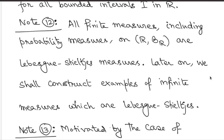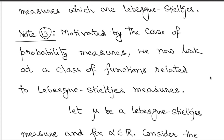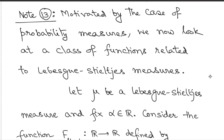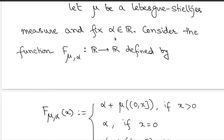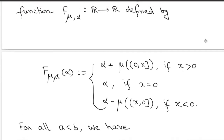Motivated by the case of probability measures, we look at the class of functions associated with Lévy-Stieltjes measures. Take a Lévy-Stieltjes measure μ and fix a real number α, which plays the role of a parameter — you can fix it to be zero if you wish. We denote the corresponding function as f subscript μ,α. Once you fix α, the function depends purely on the measure μ.